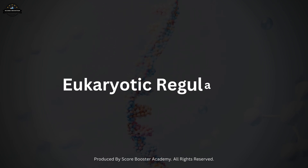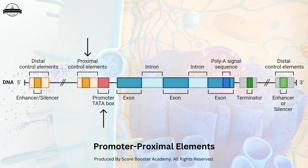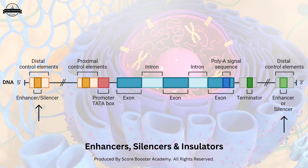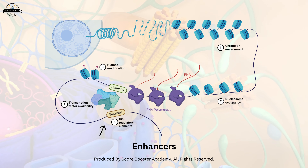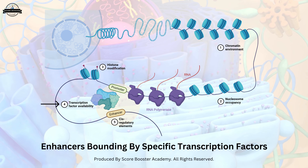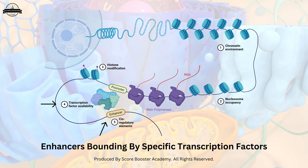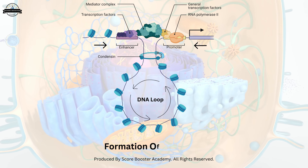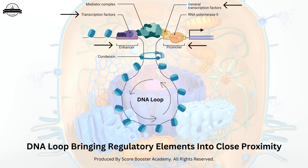Eukaryotic transcription regulation is more intricate and involves multiple layers of control. These include promoter proximal elements, enhancers, silencers, and insulators, which interact with various transcription factors and regulatory proteins. Enhancers are DNA sequences that can significantly increase the transcription of a gene when bound by specific transcription factors. These enhancers can be located thousands of base pairs away from the gene they regulate. The interaction between enhancers and promoters often involves the formation of DNA loops, bringing distant regulatory elements into close proximity with the transcription initiation complex.